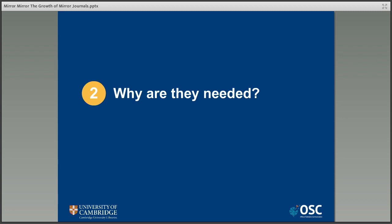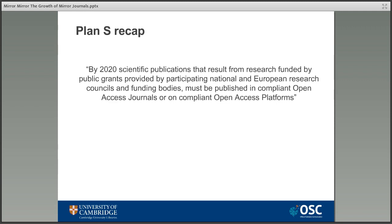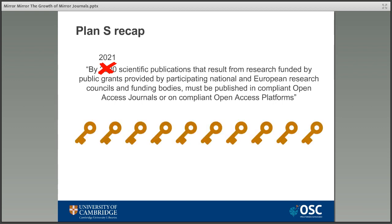So now we have a better idea of what mirror journals actually are — why do we need them? One of the main reasons involves Plan S, the set of principles released in late 2018 outlining how research outputs can be shared openly into the future. Plan S states that by 2020 — now extended by a year to 2021 — scientific publications that result from research funded by public grants provided by subscribing funders must be published in compliant open access journals or on compliant open access platforms. The important principle for this webinar is that the hybrid open access publishing model has been specifically declared as non-compliant with Plan S.